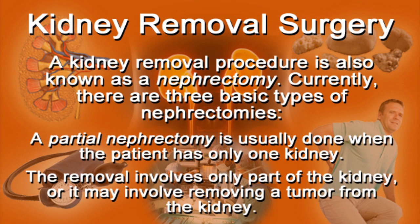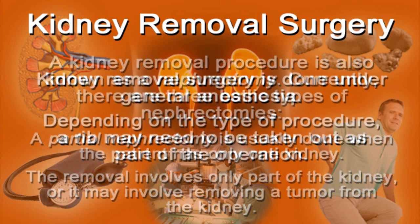The third type is known as a partial nephrectomy. This type is usually done when the patient has only one kidney. The removal involves only part of the kidney, or it may involve removing a tumor from the kidney.